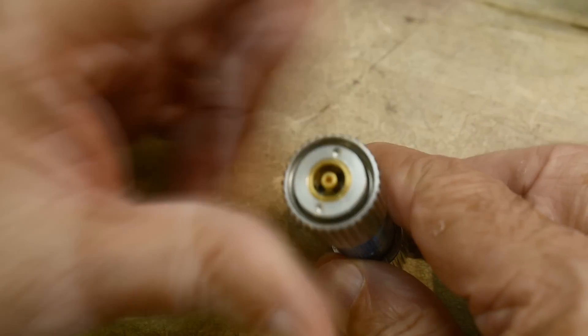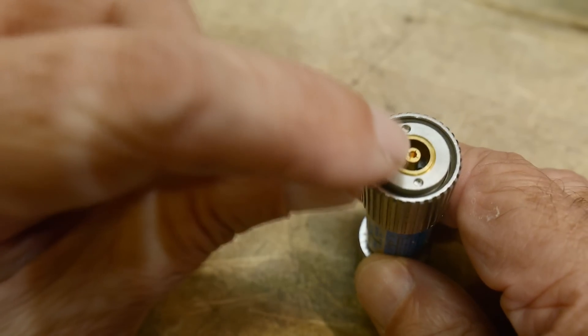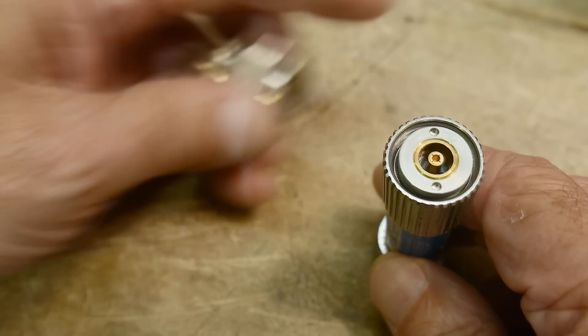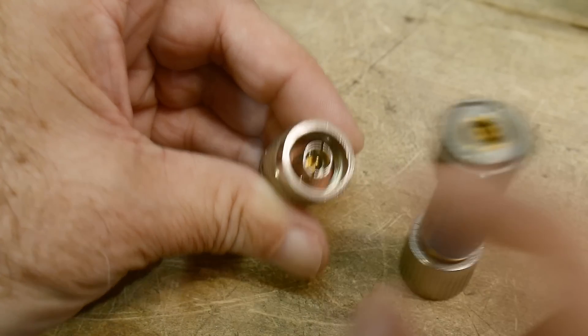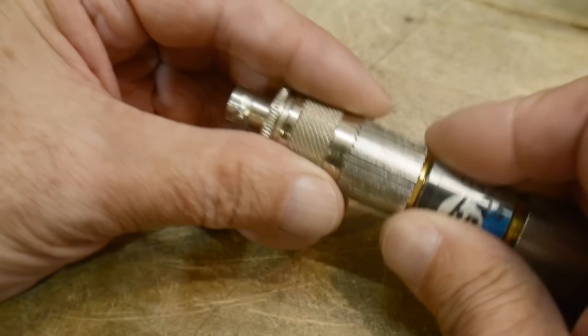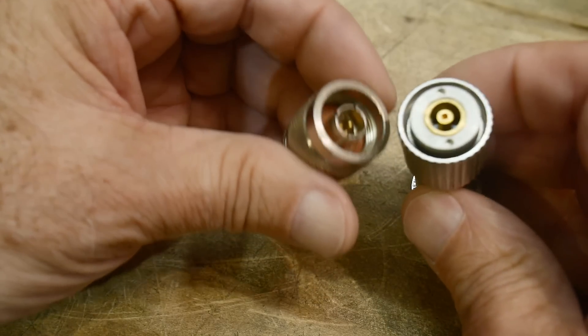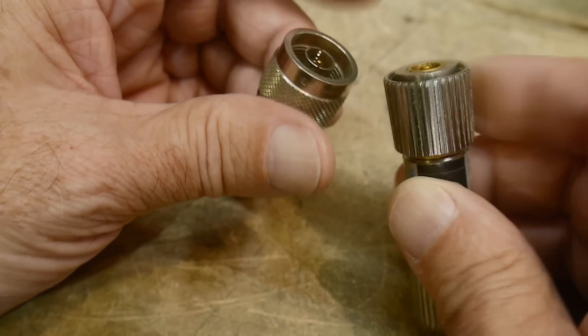And it has this really weird connector. So you'd think, okay, well, it looks kind of like an N connector where there's a center pin and then an outside thing, they're about the same size, but they don't really go together, and you're trying to figure out, well, how does this work?